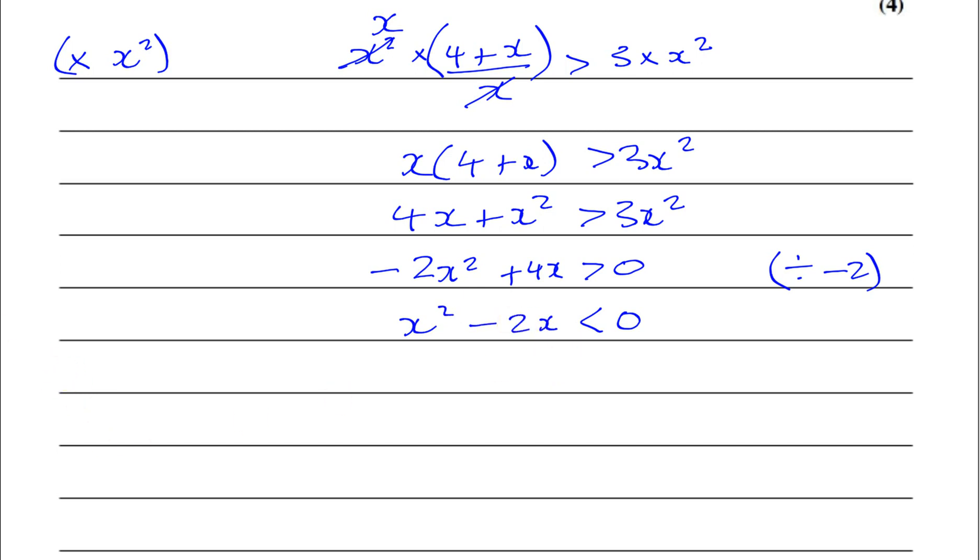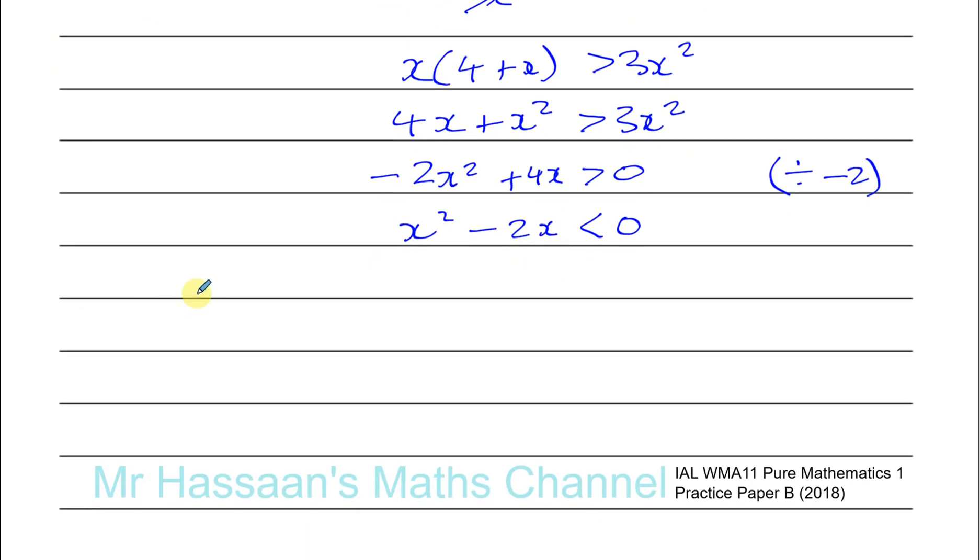So now I want to solve this quadratic inequality. What I'm going to do is I'm going to find out when x squared minus 2x is equal to 0. Now x squared minus 2x is equal to 0 when x is 0 and when x is 2. And this is going to open upwards like this.